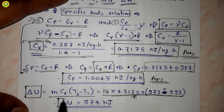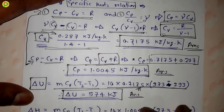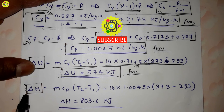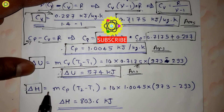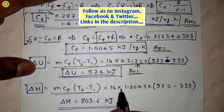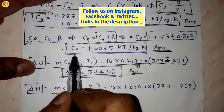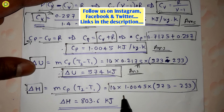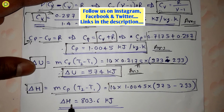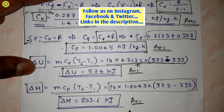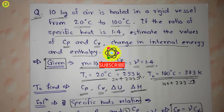Now for the change in enthalpy, delta H. Its formula is m·cp·(T2 minus T1). Putting in all the values with cp = 1.0045 kJ/kg·K, m = 10 kg, and (T2 minus T1) = 80 K, after calculating we get delta H equal to 803.6 kJ.